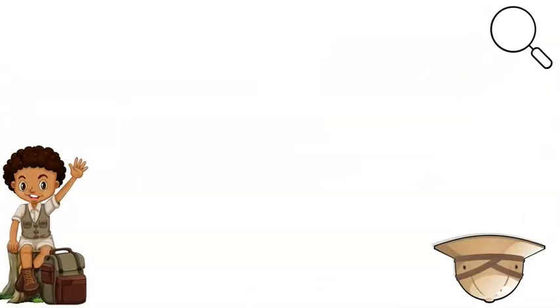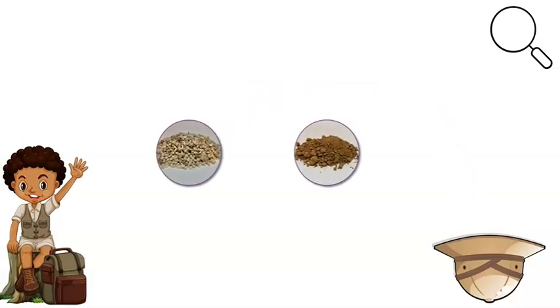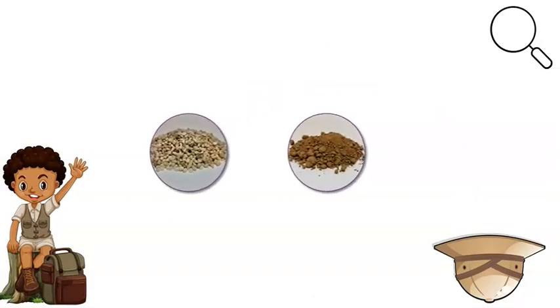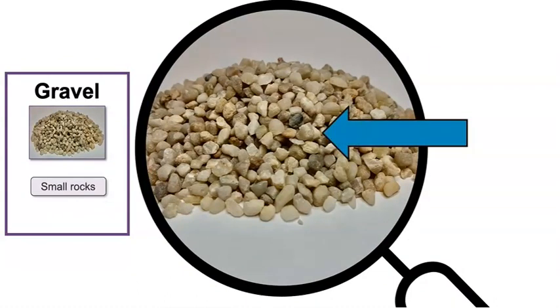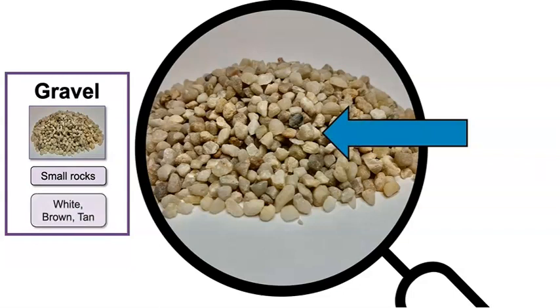Here we go. Let's try another. Wow! We pulled two samples this time. Let's start with this one. This land sample is gravel. Do you see all the small rocks? What color is the gravel? Did you say some small rocks are white, some are brown, and others are tan? Great work!